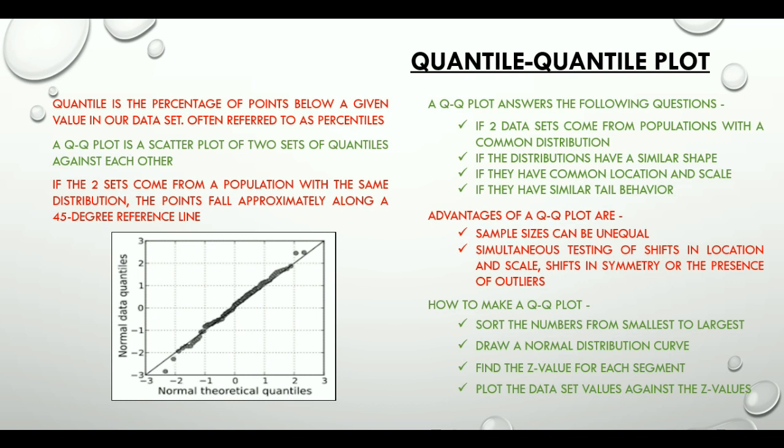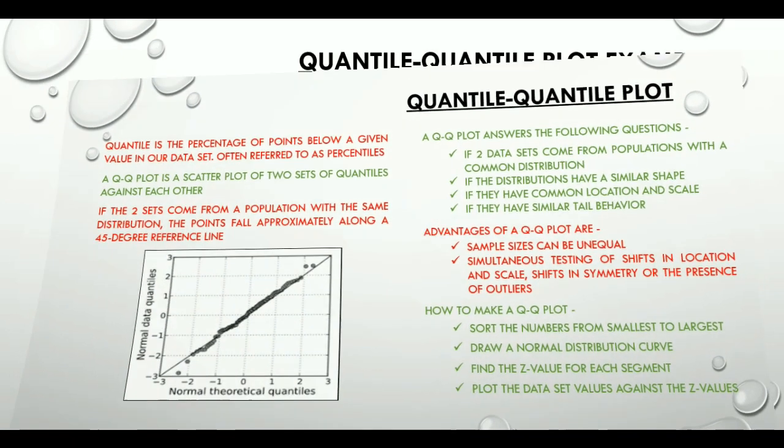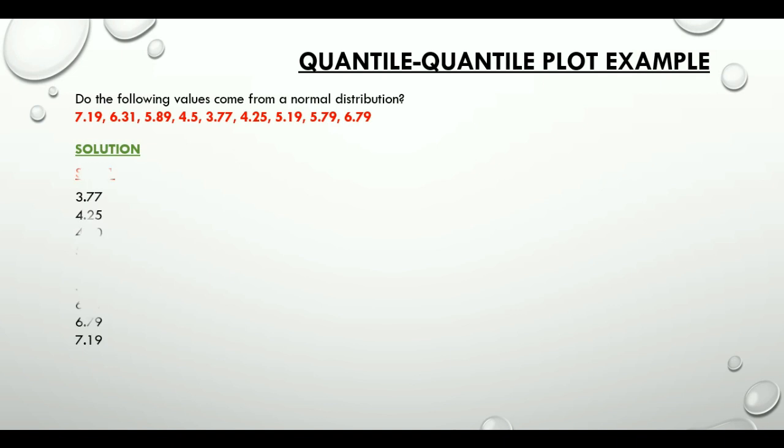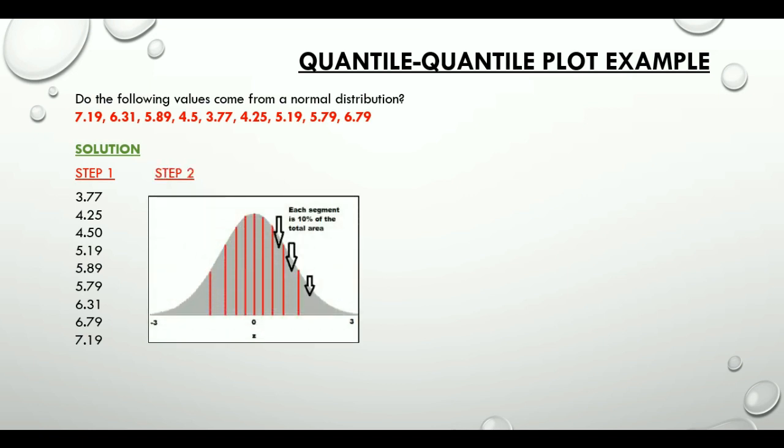Now let's work on an example to get a better understanding. We have these nine values with us and need to confirm if they come from a normal distribution. Starting with step one, we would sort them from smallest to largest. Step two: we will draw a normal distribution curve and divide it into n-1 segments.